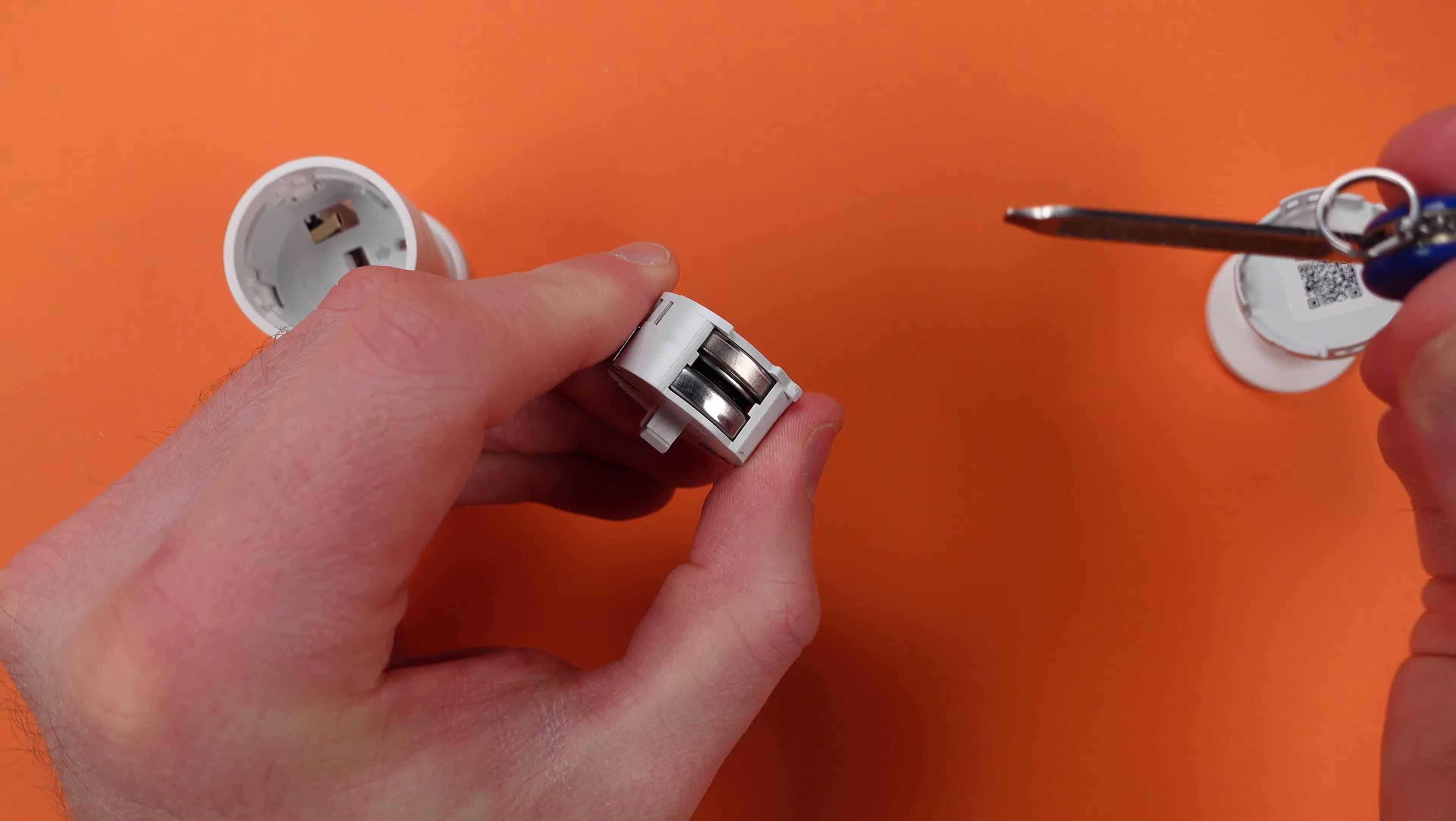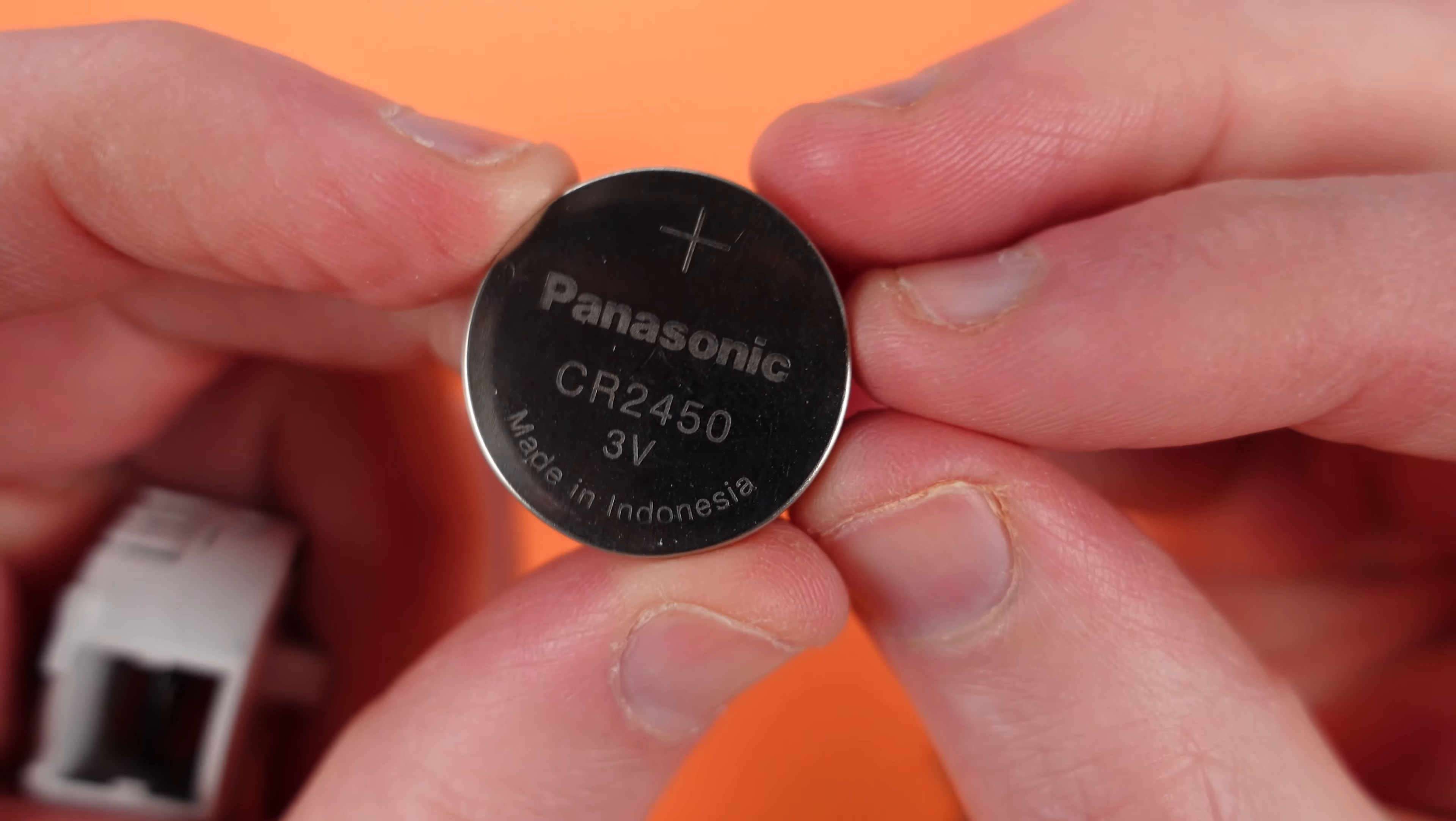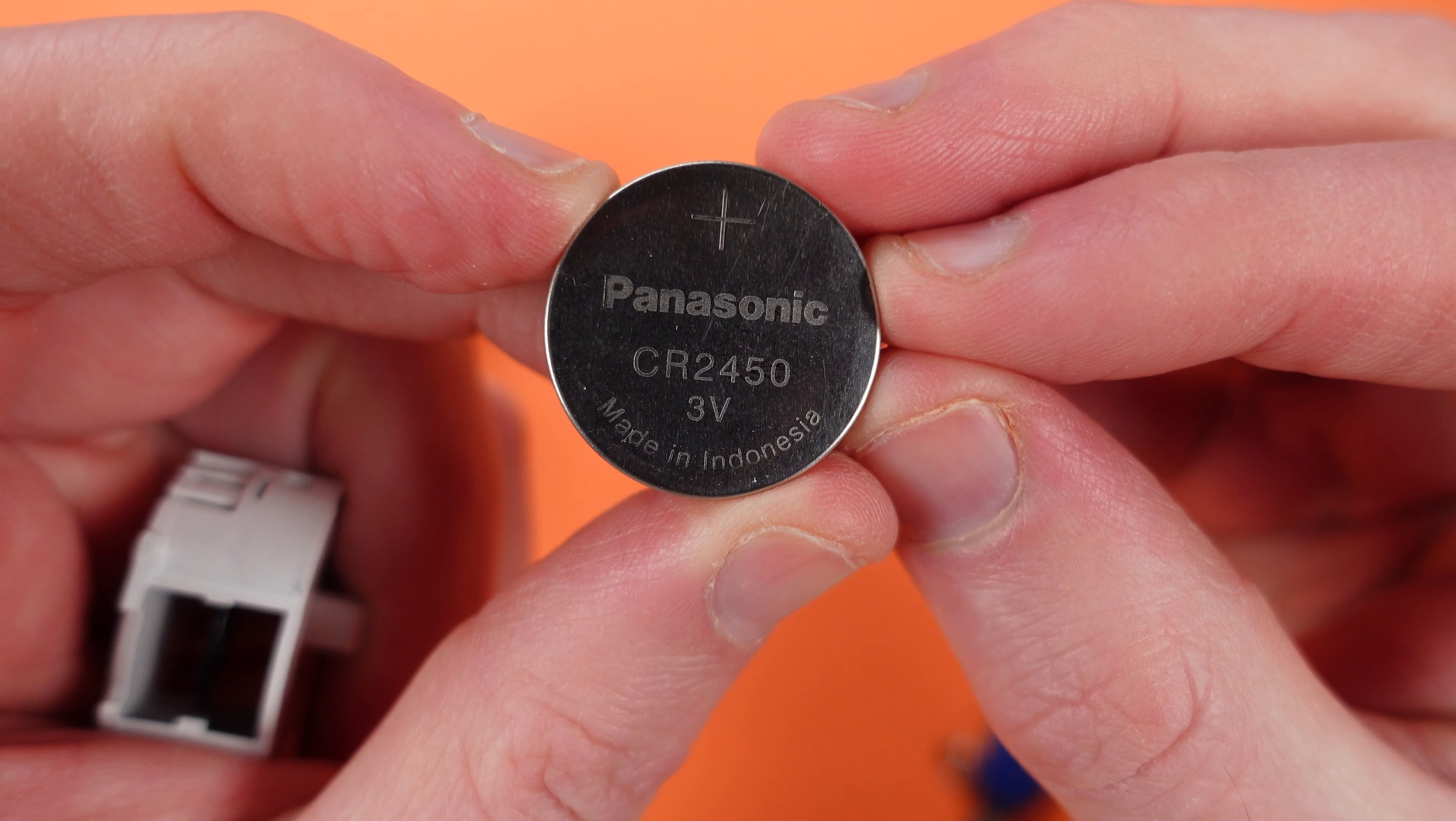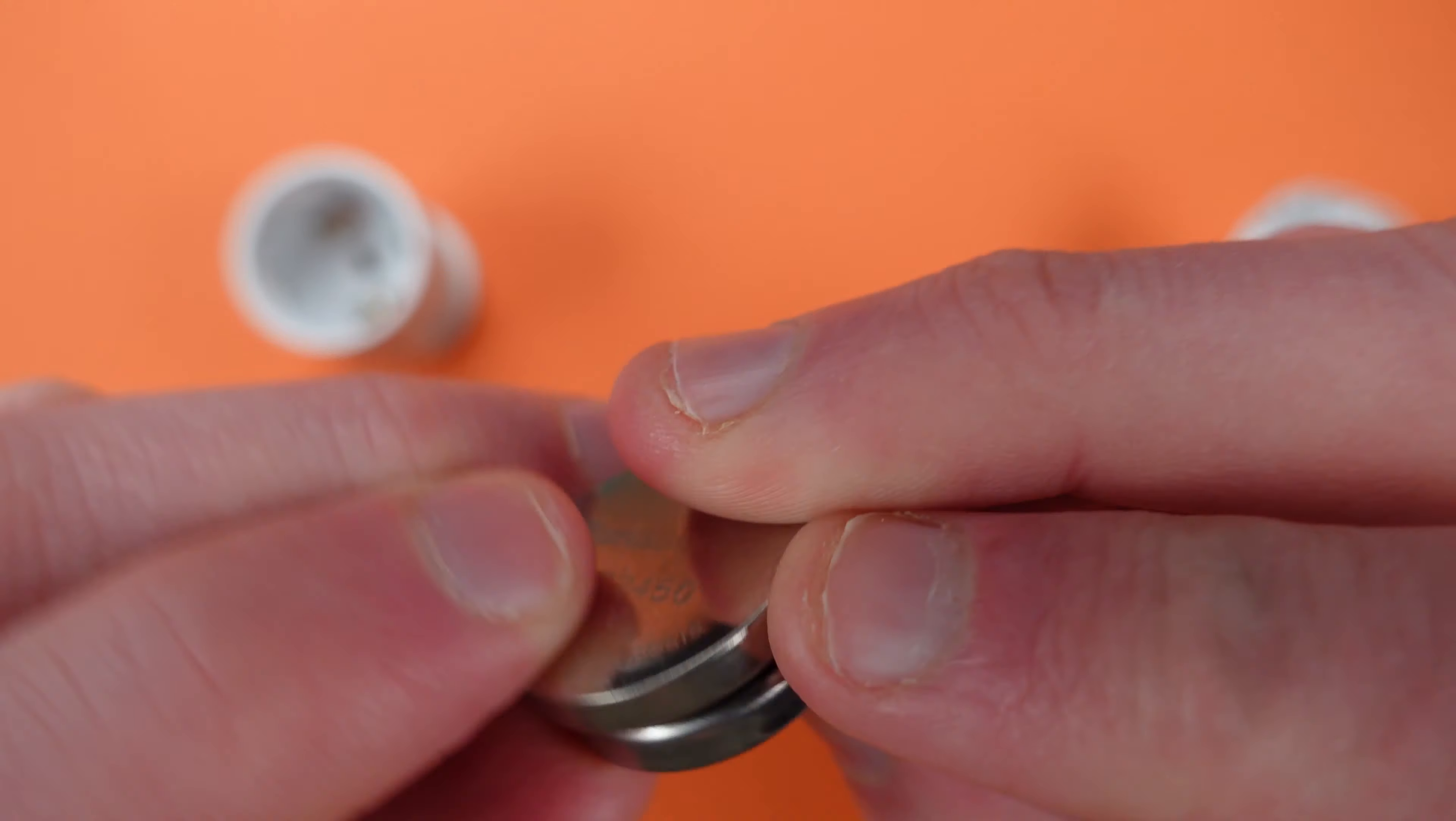Now you have two batteries. You can push them out like this and they'll come out. What you're going to notice is it's two CR-2450s and they are like this.